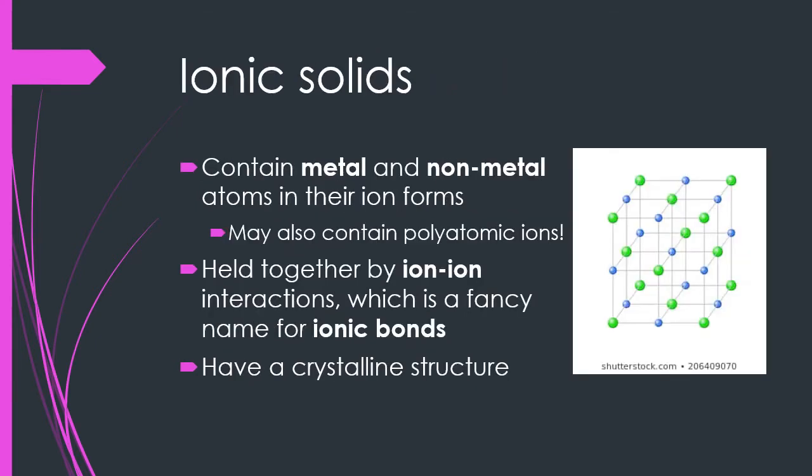Our next category is ionic solids. Ionic solids contain cations and anions, most often in the form of a metal and a non-metal in their ion forms, although there can also be polyatomic ions involved. These are held together by ion-ion interactions, where each anion is attracted to all of its neighboring cations and vice versa — in other words, ionic bonds hold together this structure.